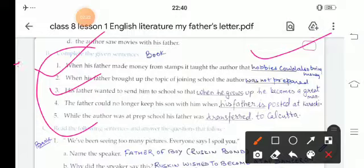Fourth one: The father could no longer keep his son with him when his father was posted in Karachi. While the author was at prep school, his father was transferred to Calcutta.